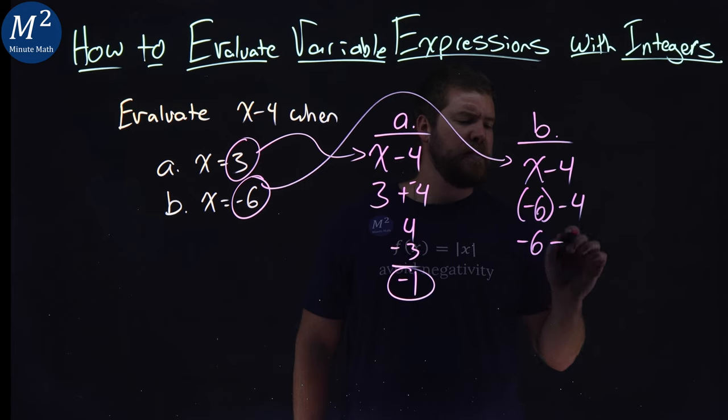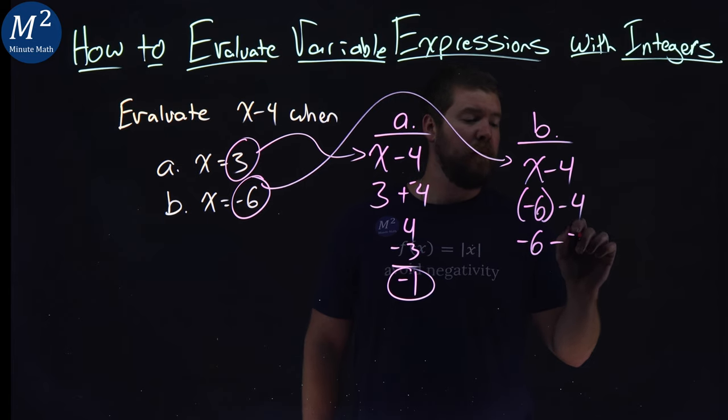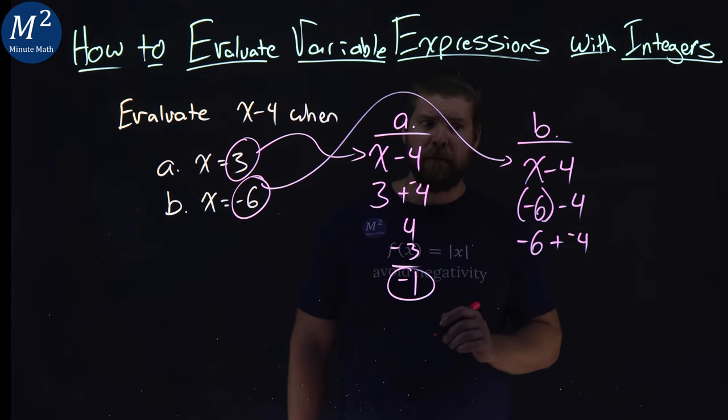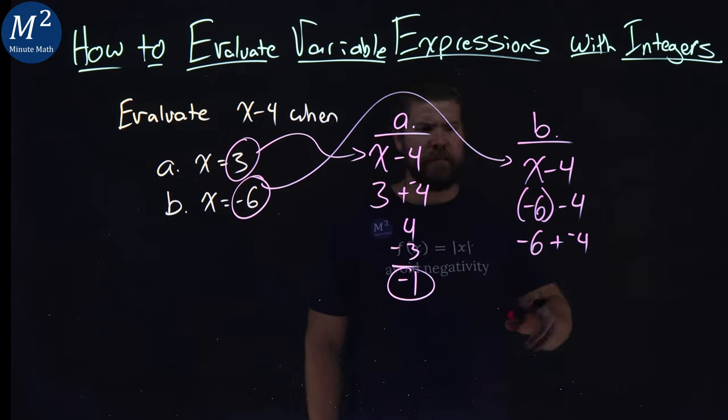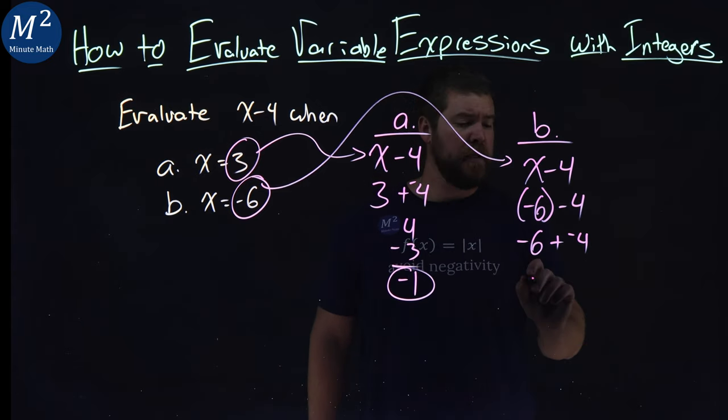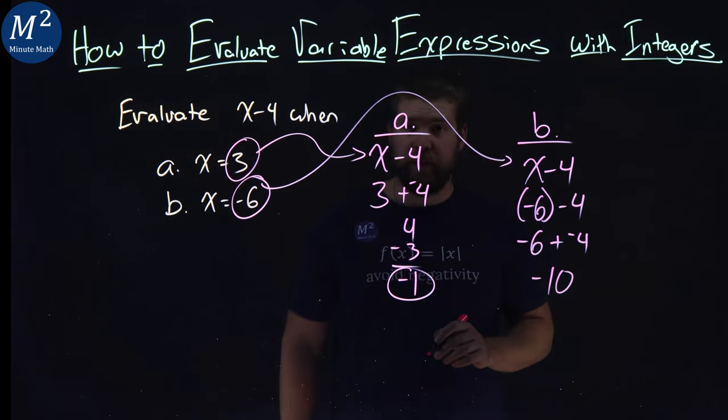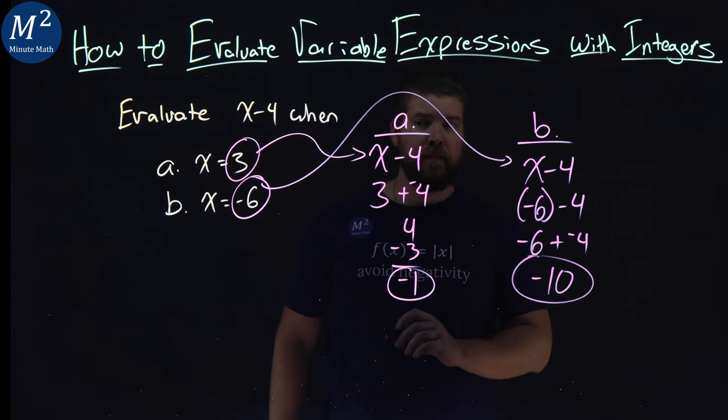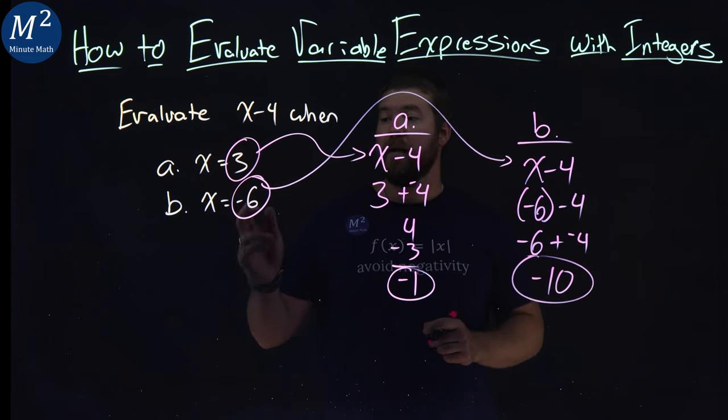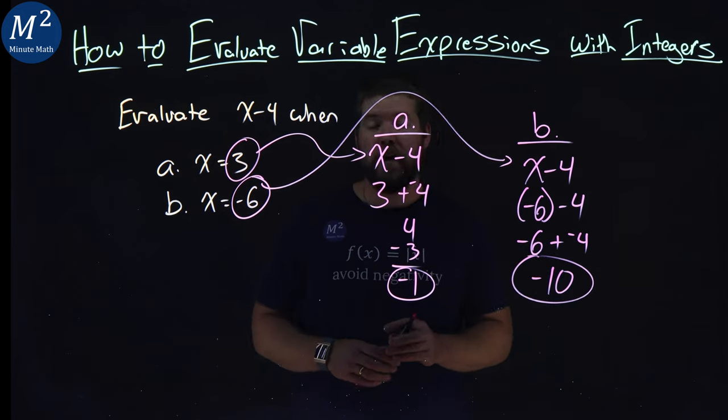Negative 6 minus 4 is the same thing as negative 6 plus a negative 4. And that's easier to see. Negative 6 plus a negative 4, negative 10. And there we have it. x minus 4 when x equals negative 6 gives us a negative 10.